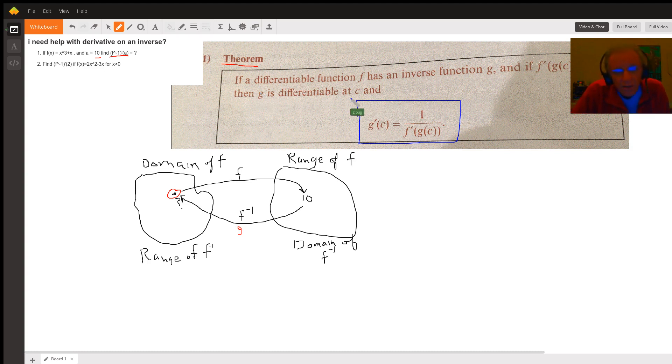Before we talk a little bit more about that theorem, let's just get an idea of the points that we're talking about. What we're saying here is that there's some point in the domain of the inverse function that has a value of 10. How can we find out what this x value was in the domain of f?